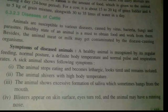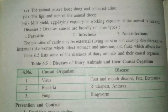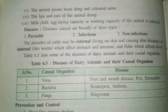Sometimes the animal's eyes will be red, and the skin of the animal may change or show abnormalities. The animal may also pass loose dung and have colored urine — the color of the urine will change. The lips and ears of the animal droop. Additionally, if the animal is suffering from any disease, its working capacity, egg-laying capacity, and milk-yielding capacity will all be reduced.